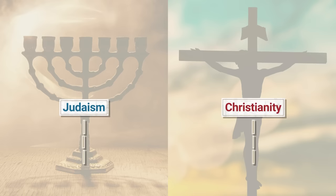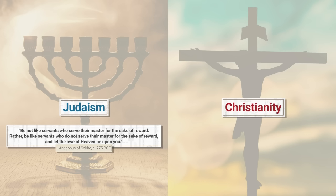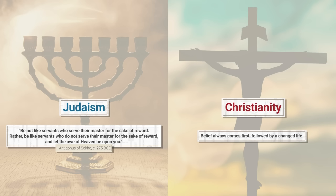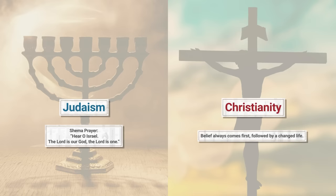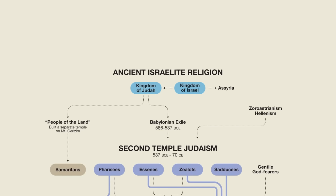This is summed up by the following principle given by the early Pharisee Antigonus of Soko: 'Be not like servants who serve their master for the sake of reward. Rather, be like servants who do not serve their master for the sake of reward, and let the awe of heaven be upon you.' I'm not saying that Christians are not at all concerned with what they do — of course they are — but in Christianity, belief always comes first, followed by a changed life. And I'm also not saying that there are absolutely no beliefs in Judaism. For some Jews, their only creed is the Shema prayer: 'Hear, O Israel, the Lord is our God, the Lord is one.' For others, especially the Orthodox, there are the 13 Principles of Faith by Maimonides. Generally speaking, Christians put a stronger emphasis on believing and Jews put a stronger emphasis on doing.